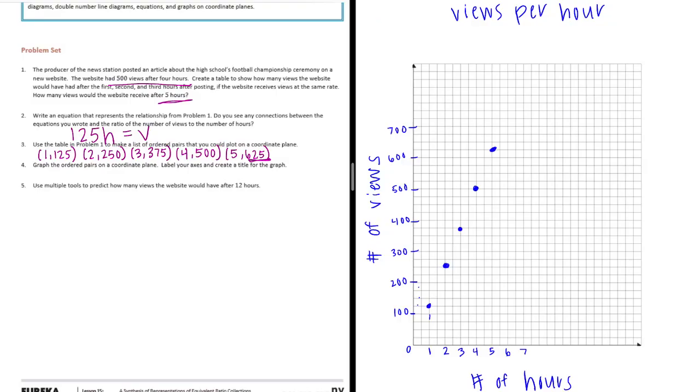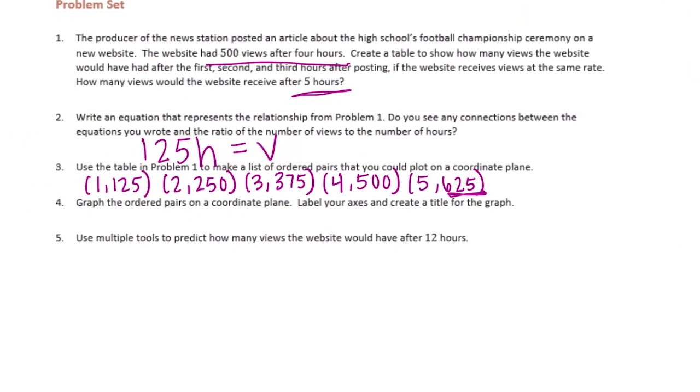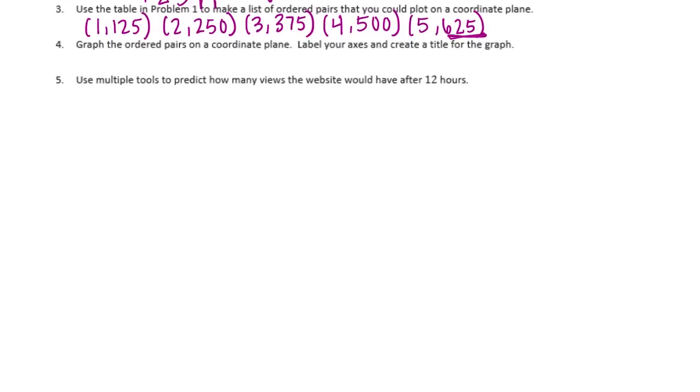And number five: use multiple tools to predict how many views the website would have after 12 hours. So one of the tools you could use could be a chart. If we extended this and kept going to 12 hours, that would be one way to do it. Another tool you could use would be the formula that we just came up with, so 125 times the number of hours would be equal to the views. So if we did 125 times 12, two times five is 10 carry the one, two times two is four plus one is five, two times one is two. Put our zero down. One times five is five, one times two is two, one times one is one. Add it together.